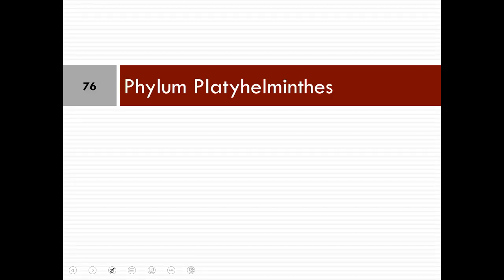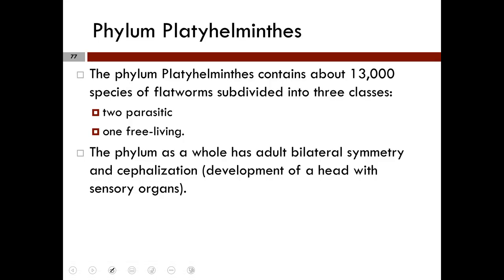Next is Phylum Platyhelminthes — the flatworms, part of the Lophotrochozoa. There are approximately 20,000 species subdivided into three classes: the turbellarians (planarians and relatives), the trematodes (including monogeneans — the flukes), and the cestodes (tapeworms). Two of these classes are parasitic; one — the turbellarians — is free-living. You can find these in Table 31.2.